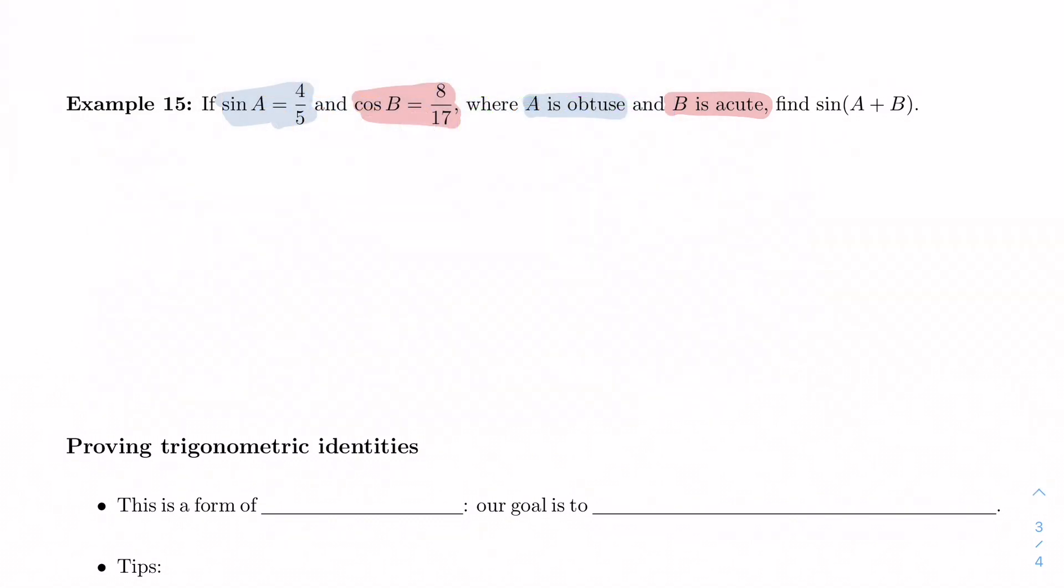Well, sine of A is 4/5, so let's maybe start by drawing that. I'm going to draw it however I want. I'll deal with positives and negatives in a minute. That's a terrible looking right triangle, but for all intents and purposes, it's a right triangle. So this is angle A. Its opposite side is 4 and adjacent side is 5.